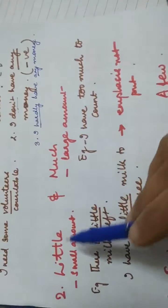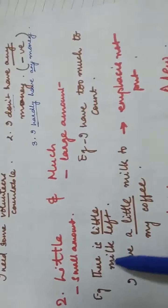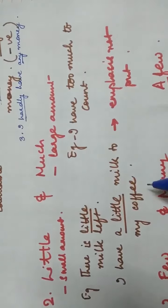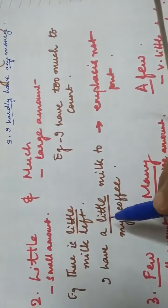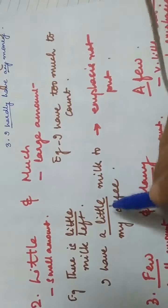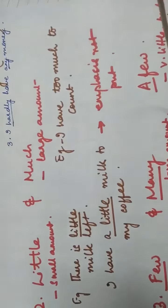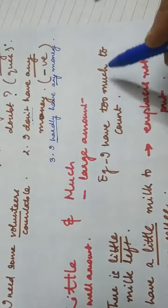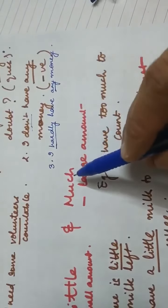Next are 'little' and 'much'. 'Little' denotes a small amount, and 'much' denotes a larger amount. For example, 'there is little milk left in the pot', or 'I'll add a little milk to my coffee'. The difference between 'little' and 'a little' is that with 'a little', there is not much emphasis on the quantity — it's just a little bit, not stated exactly. For 'much', the example is 'I have too much to count' — when we are talking about a large amount, we use 'much'.